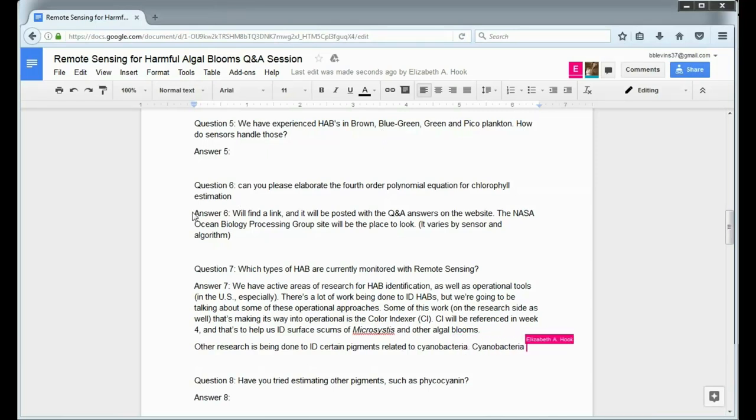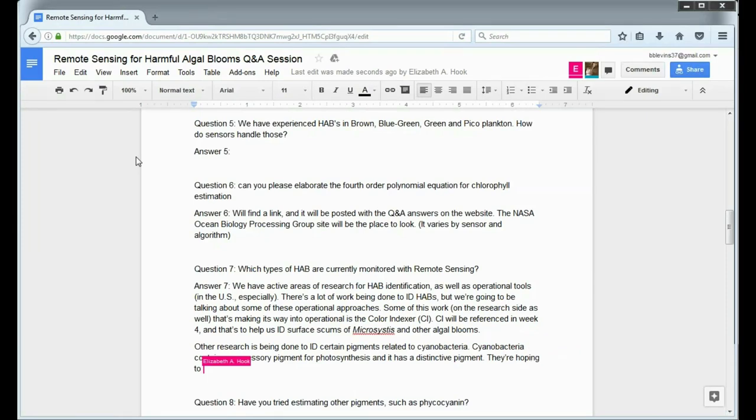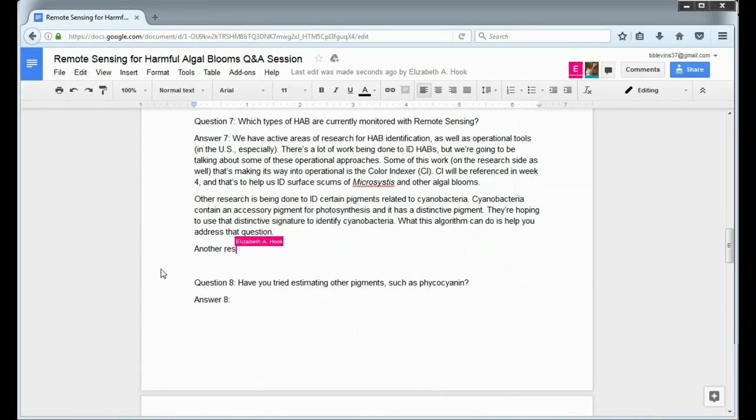So, some of the work that's being done on HAB detection that's on the research side and also that's starting to make its way into the operational is the CI or the color index or cyanobacterial index. This approach is going to be referenced in week four pretty extensively. We'll be talking about the algorithm that's used for that and that's to help us identify those surface scums of microcystis and other scum-forming cyanobacterial blooms. There's other research that's being actively done on trying to identify certain pigments that are related to cyanobacteria. So, cyanobacteria contain phycocyanin. It's an accessory pigment that's used for photosynthesis. And this phycocyanin has a signature distinctive characteristics in its spectrum.